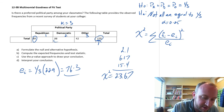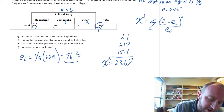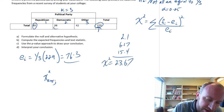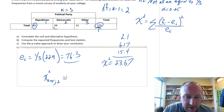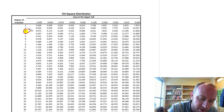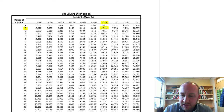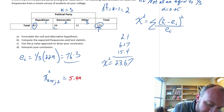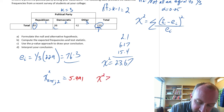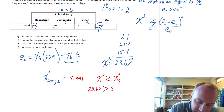Now we want to find our critical value and our p-value. Our critical value at alpha equal to 0.05, with k minus 1 equals 2 degrees of freedom — going to the chi-squared tables, chi-squared with 2 degrees of freedom at alpha 0.05 — gives a critical value of 5.991. We reject if the test statistic is greater than or equal to that critical value. Clearly, 23.67 is much greater than 5.991.